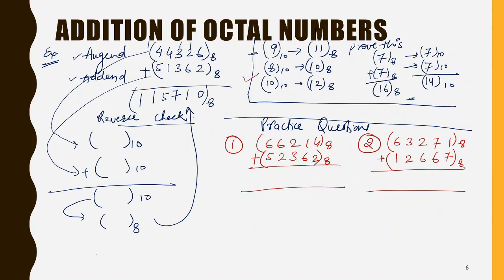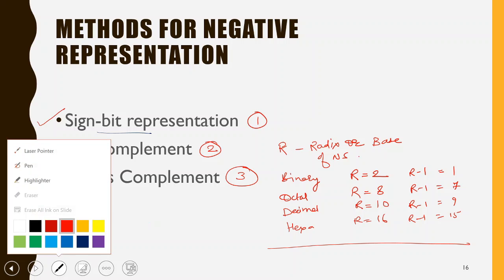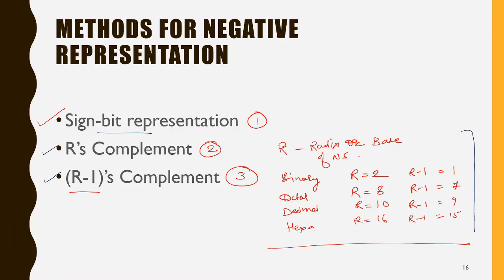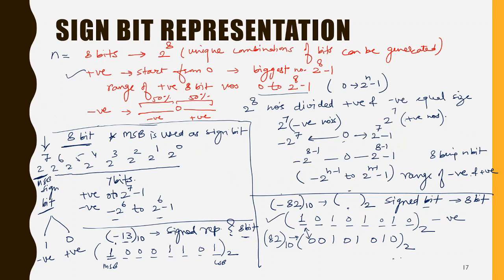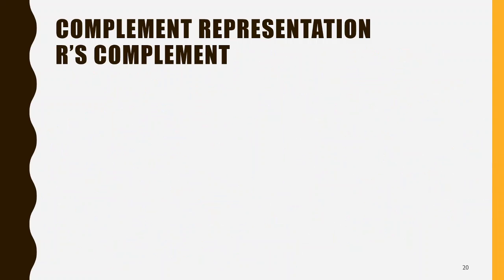The methods of negative representation are: sign bit representation, r's complement representation, and r-minus-one complement representation. You need to revise the concept of what r is — r is the radix, and for different number systems the value of r differs. In sign bit representation, the MSB is used as the sign bit. For further lectures we will start with complement representation, specifically r's complement, where r stands for the radix, or what we can call the base of the number system.